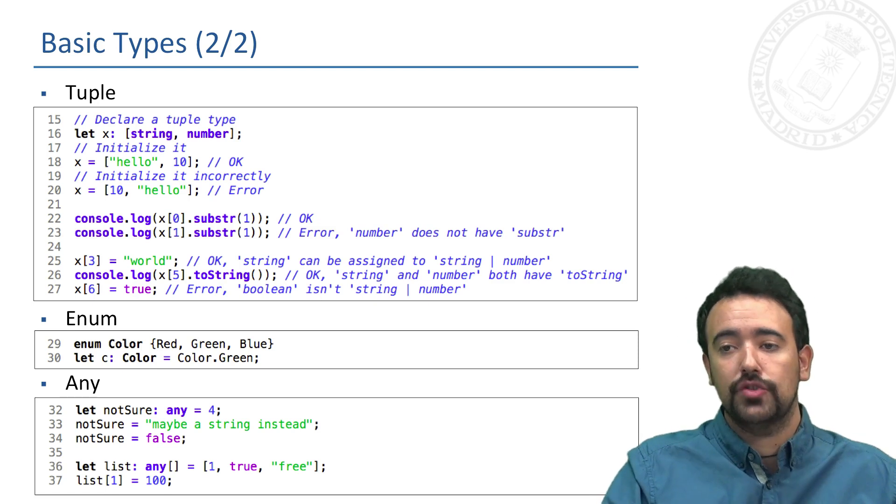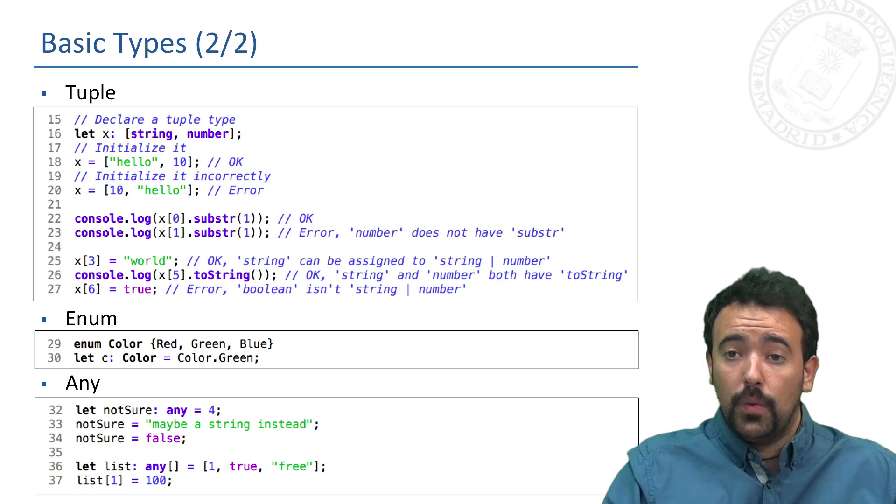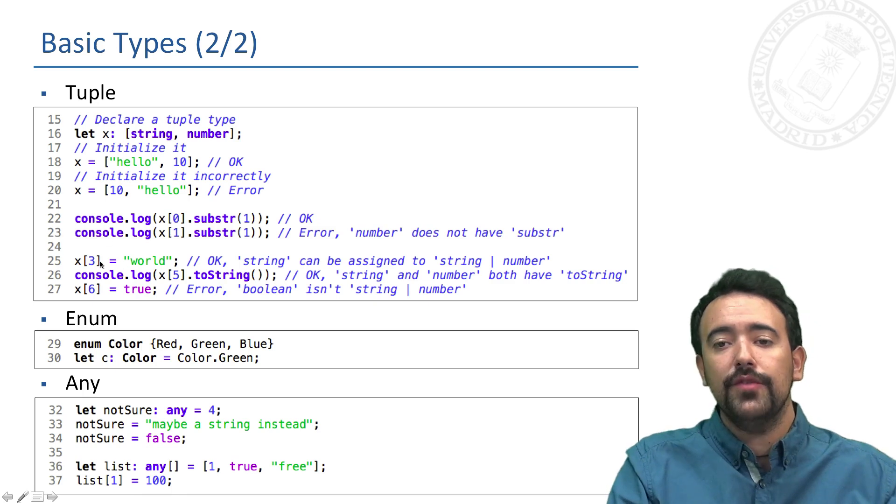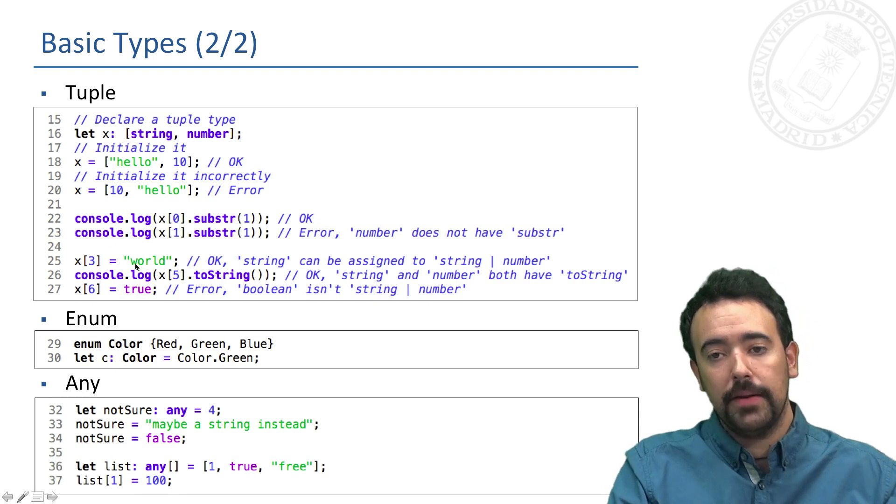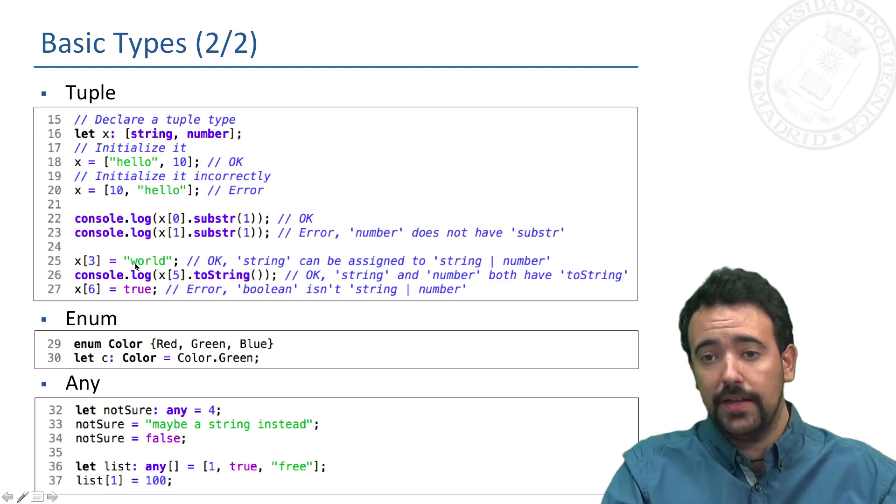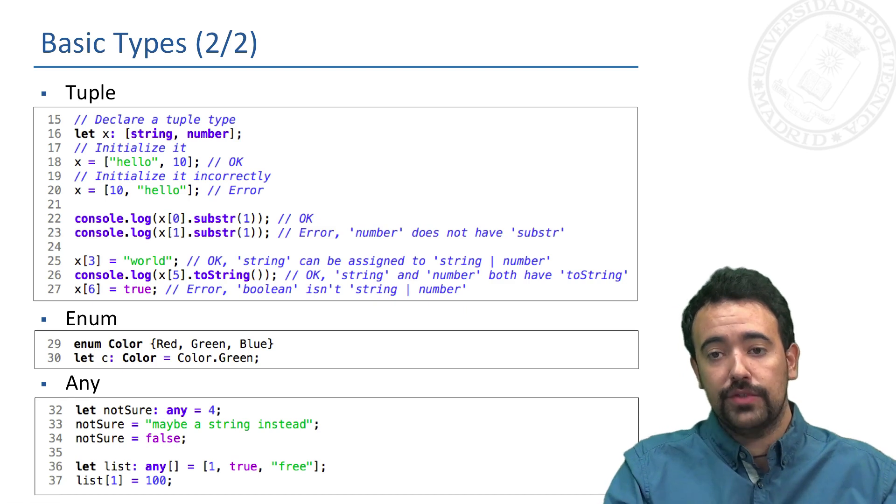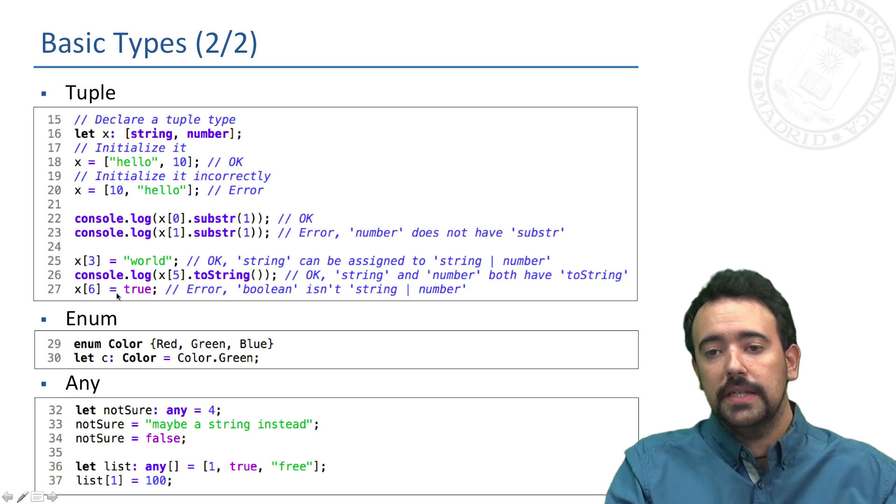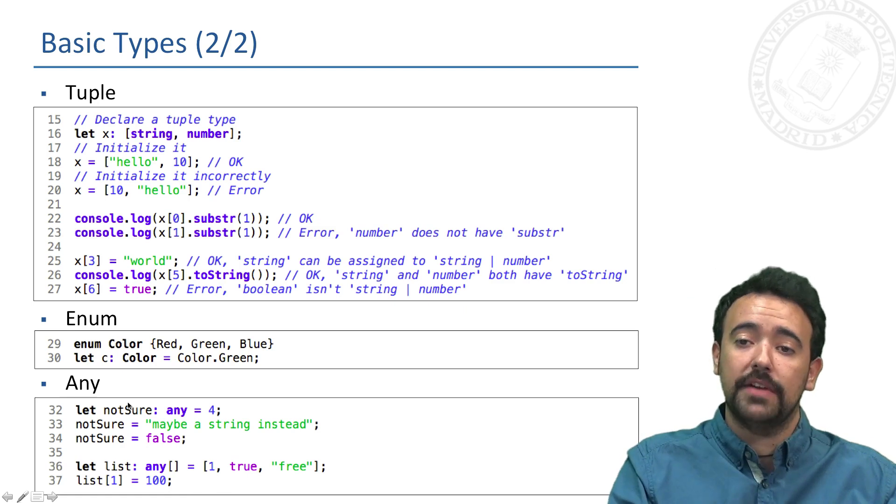We can include new values, not just two values in this tuple, but every new value we include apart from the first two should be of type string or of type number. If we try to include, for instance in this word, a string, this is okay and we can execute methods of the string object here. But if we try to include a new value that is not of type string or number, the compiler will send us an error.